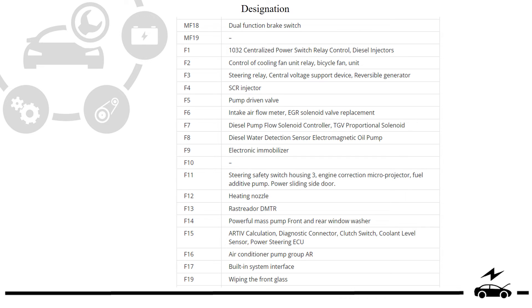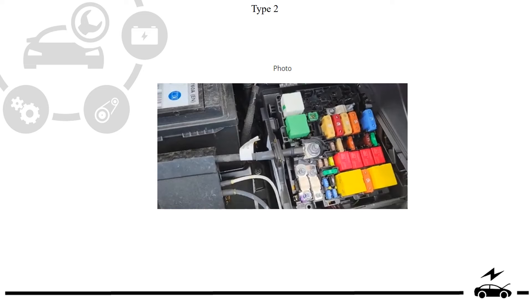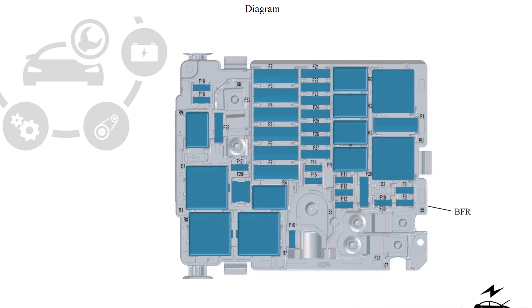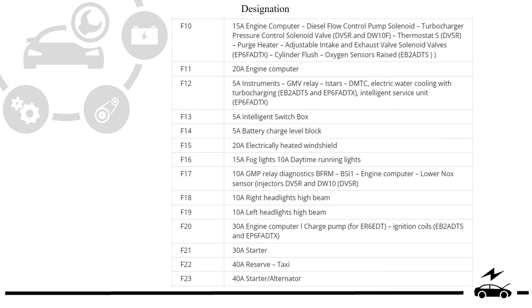Type 2 — photo, diagram, designation, destination.